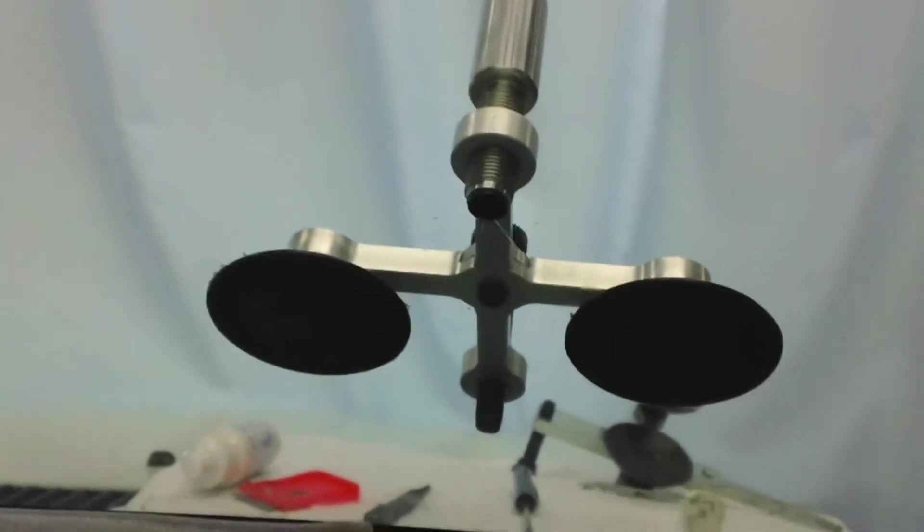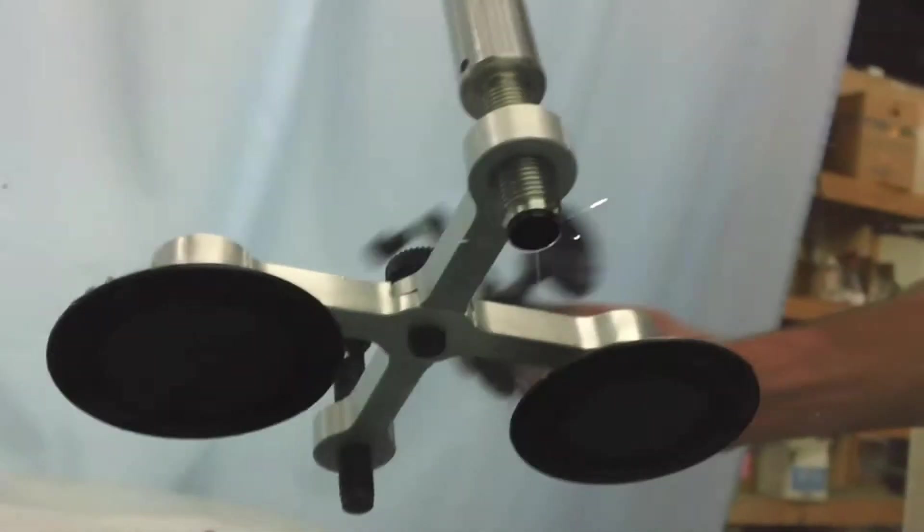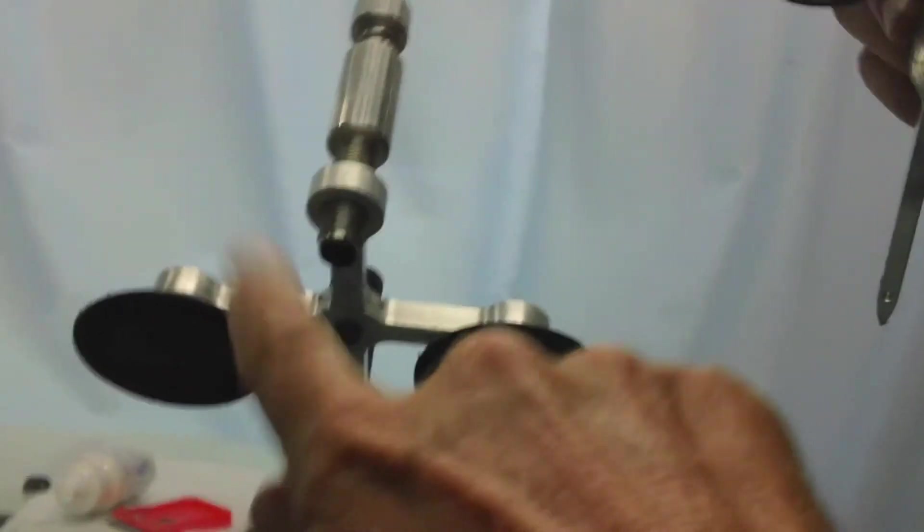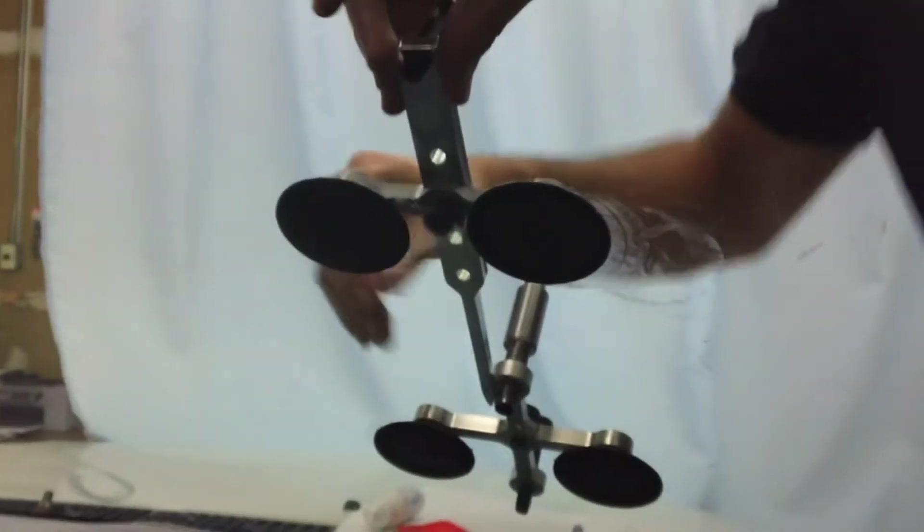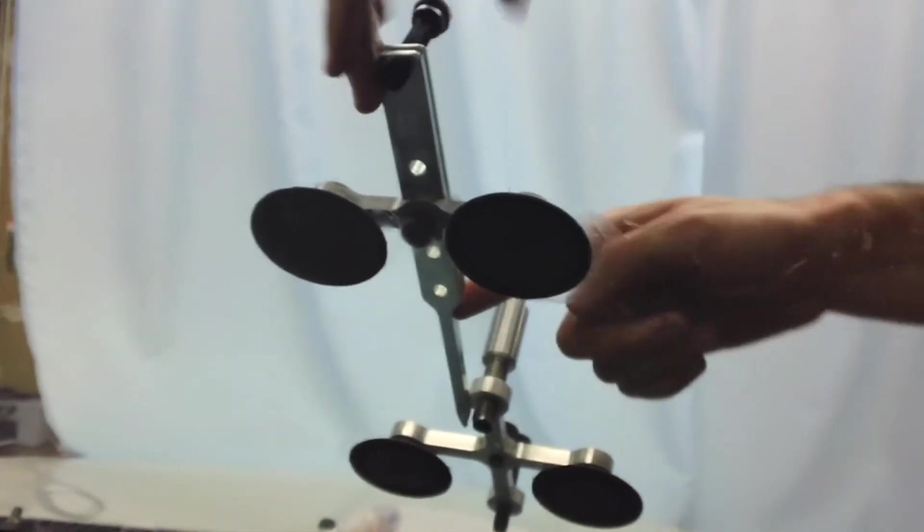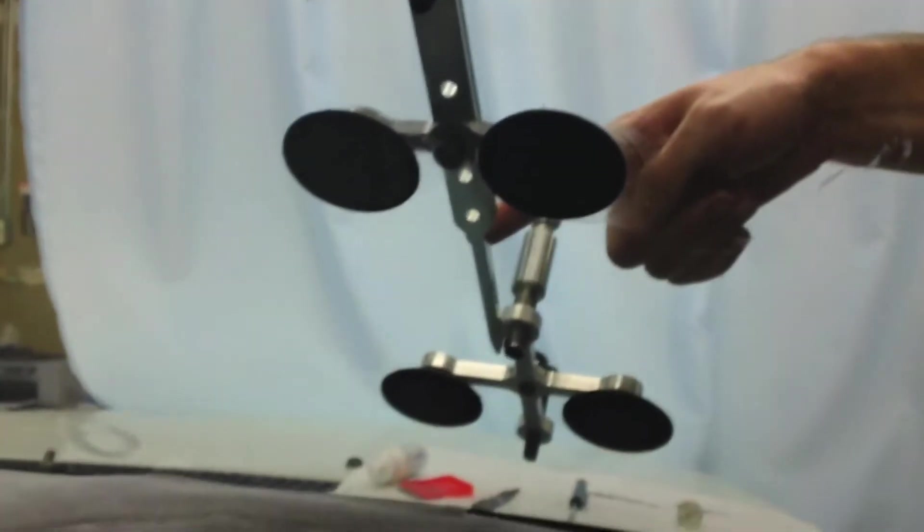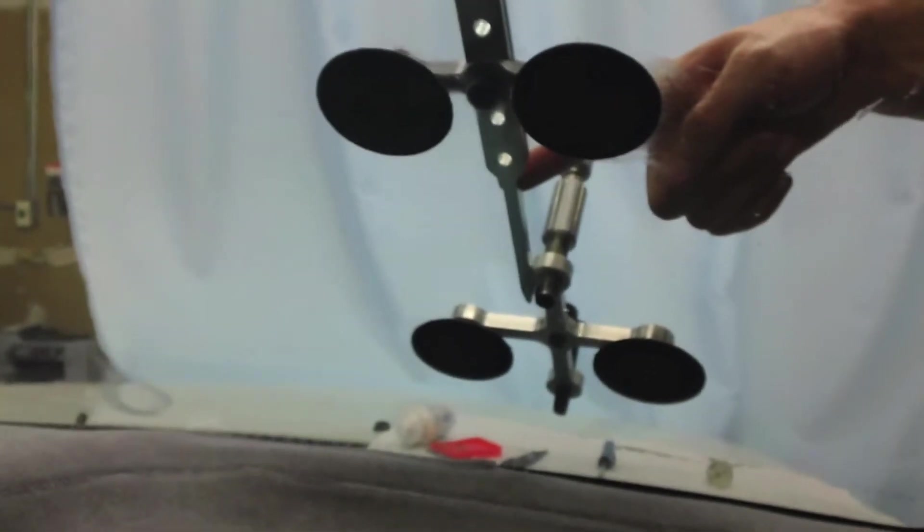Now another tool that we have when we have a stubborn leg that won't fill is called the star leg flexor. And we're going to mount this on one of those cracks that aren't filling. The way this tool works is instead of you using a probe to flex the leg with your hand, this tool does it for you.